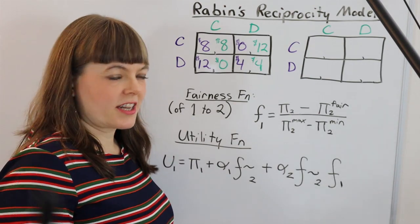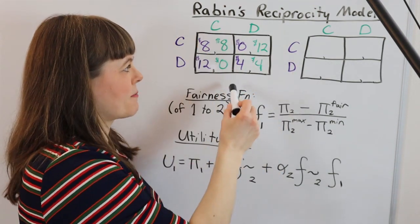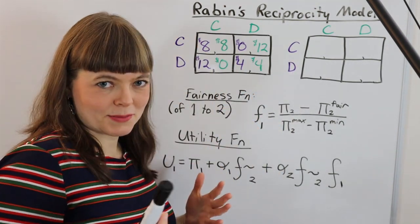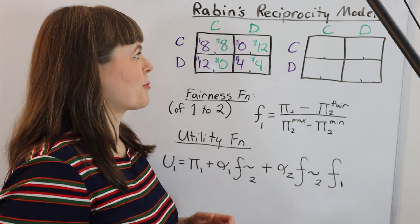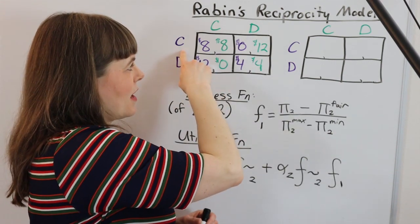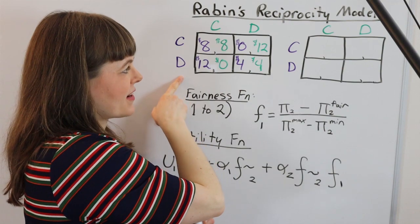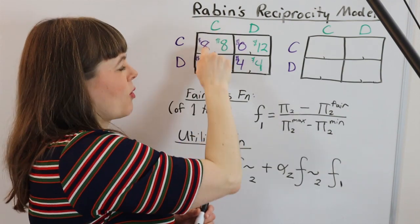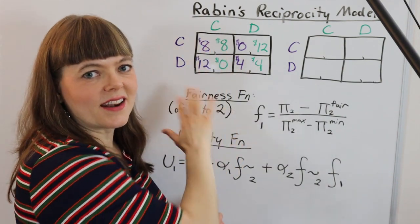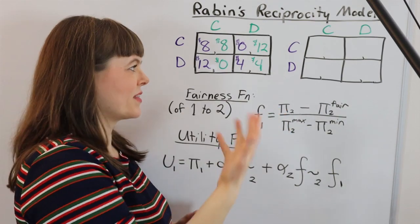Let's imagine here that we have a prisoner's dilemma and we have an economics professor doing a classroom experiment where the students can either cooperate or defect. If they both cooperate they both get eight, and you can read the table.